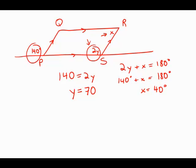And so now we want the value of Y minus X. That's 70 minus 40, and this is 30, and this is answer choice A.